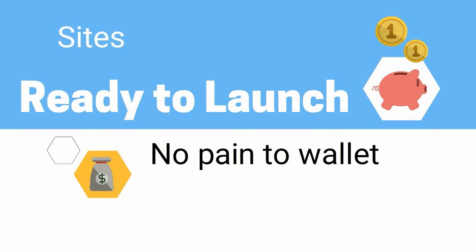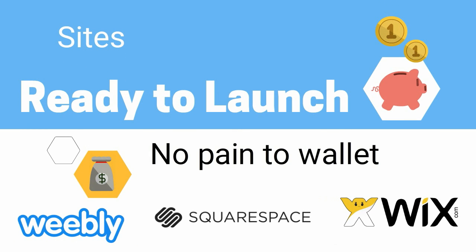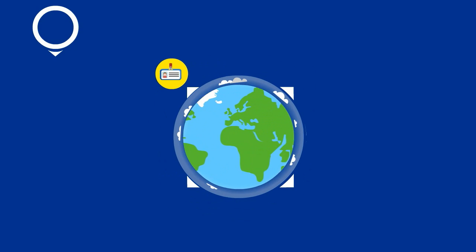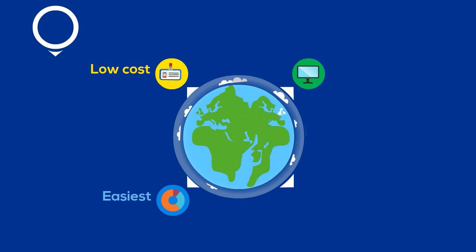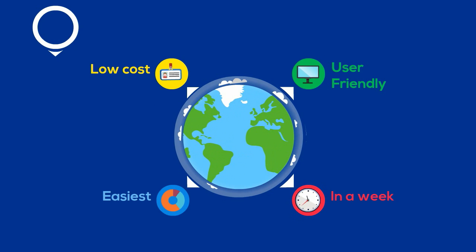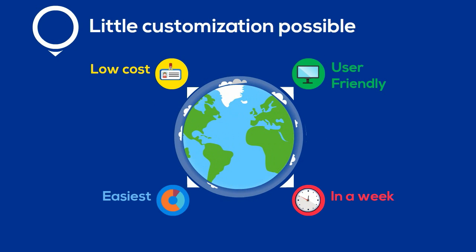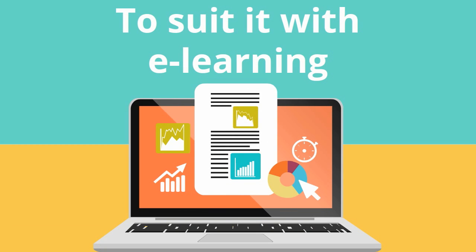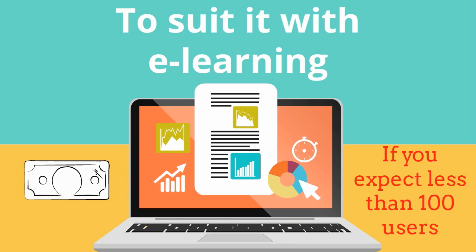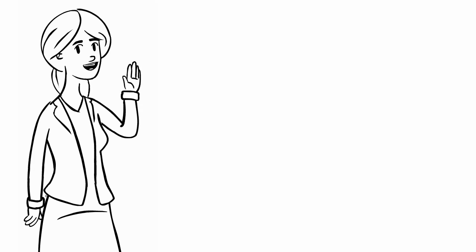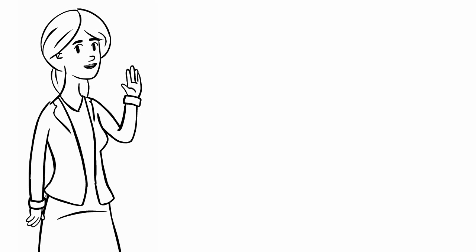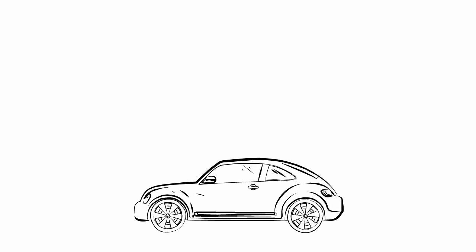Coming to the third option — ready-to-launch themed websites like Weebly, Wix, and Squarespace. These are the easiest low-cost alternatives to launch a website very cheaply within a week. There is very little customization possible, and most of these tools are not particularly built for e-learning, though some do provide certain e-learning customizations. We have seen some independent teachers who don't expect more than 100 users to pay for their course using it. It is less of a hassle and no pain to the wallet, so it can be used as a trial and experimentation to start with.